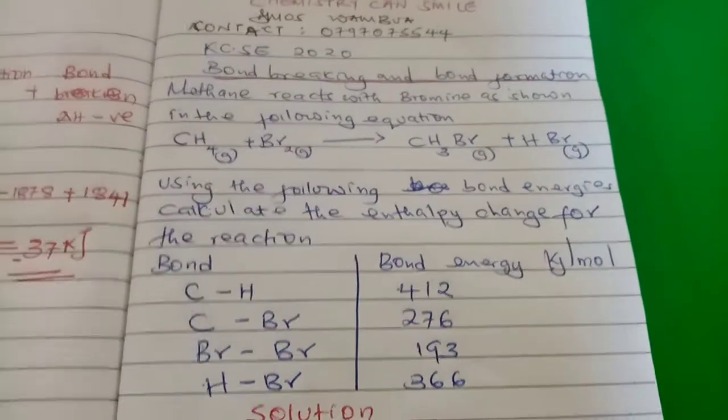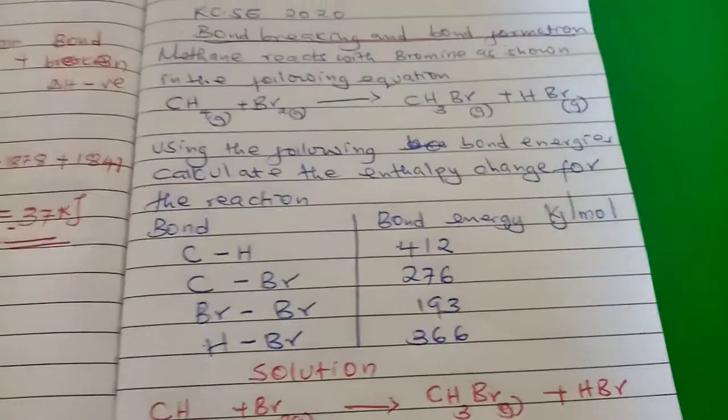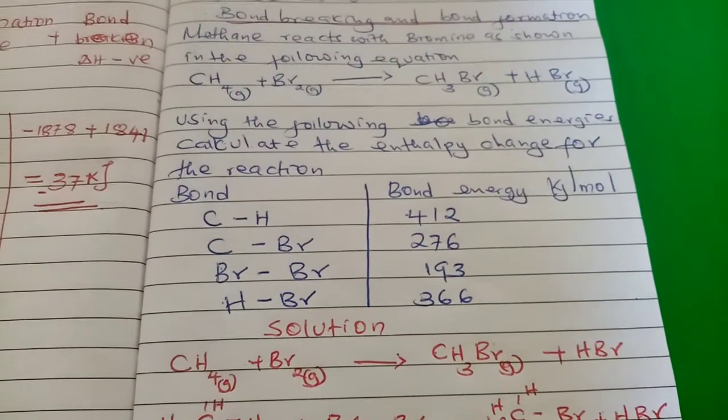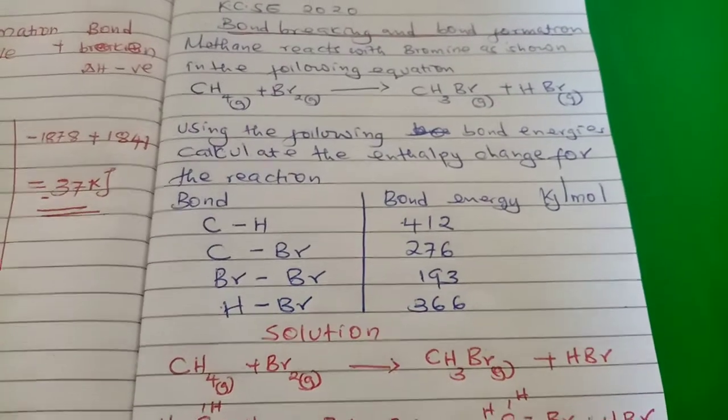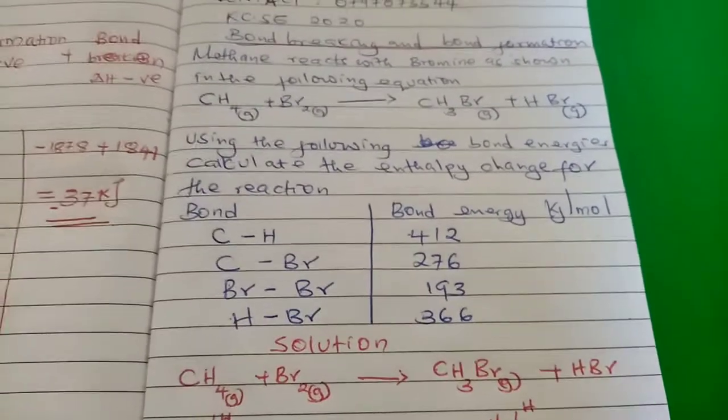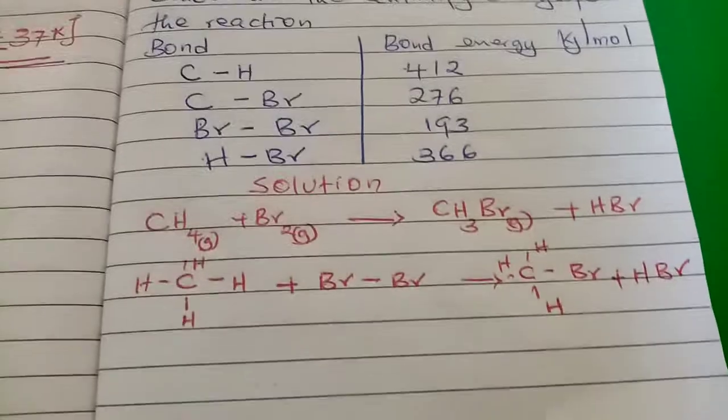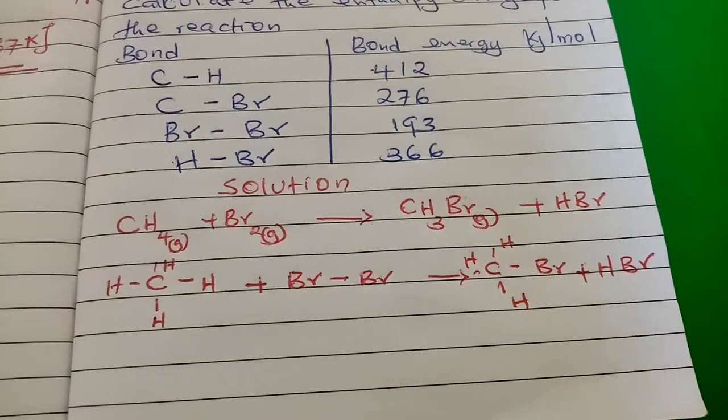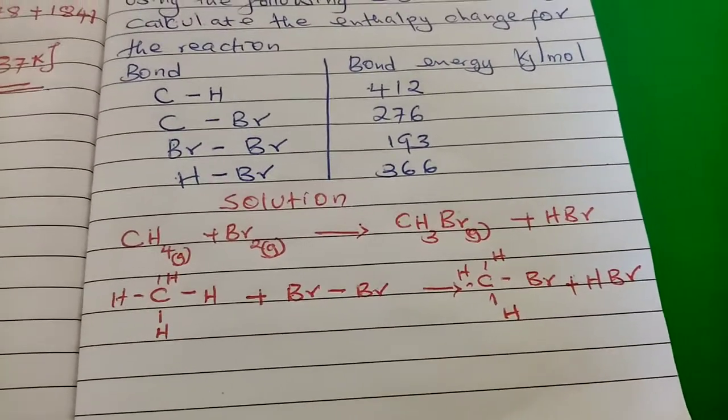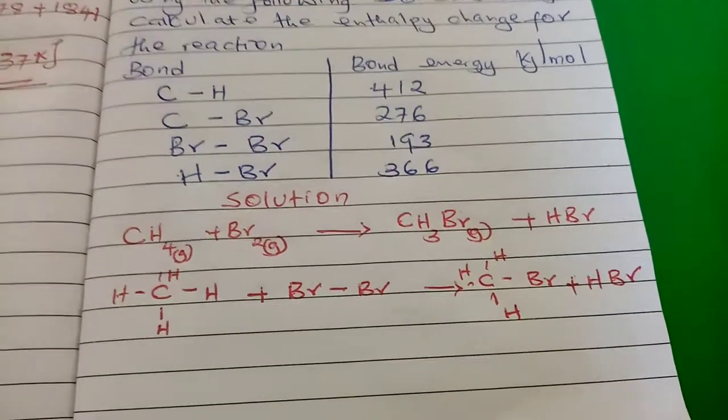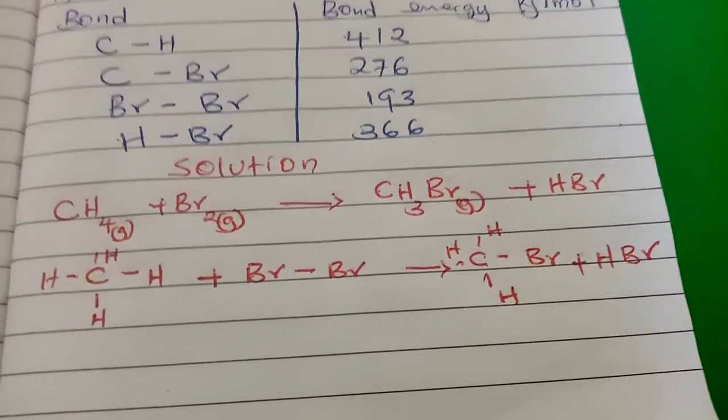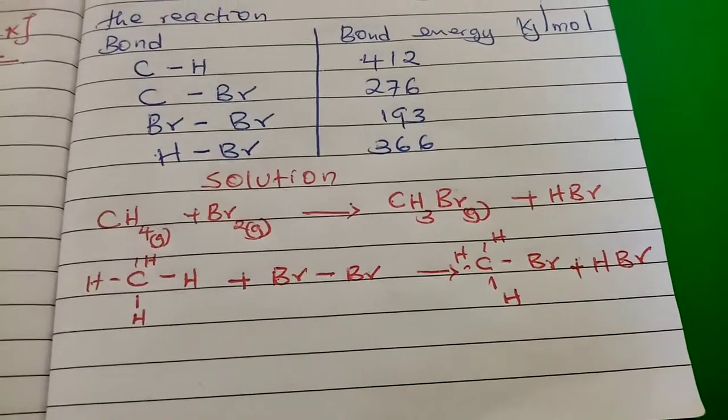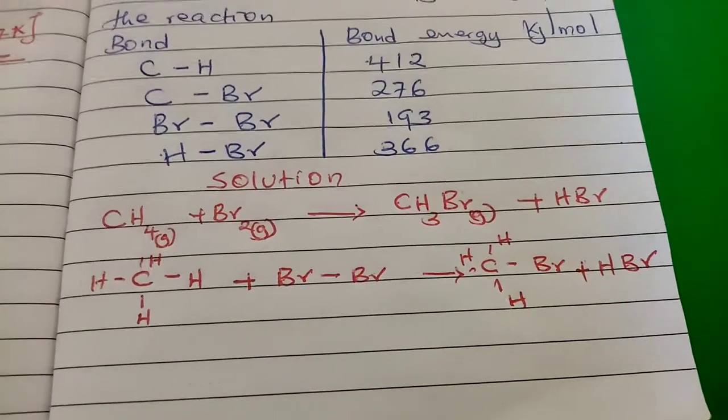Now let's go to the solution. I will begin by writing a balanced chemical equation for the reaction, which you have been given. We proceed by writing the bonds that are present in the reactant side and the product side. You can see the bonds there. After breaking them down...